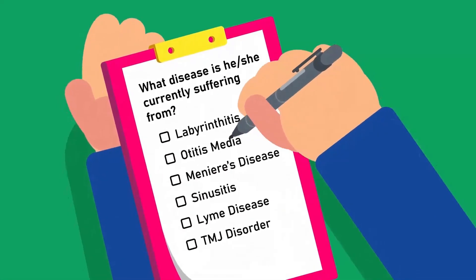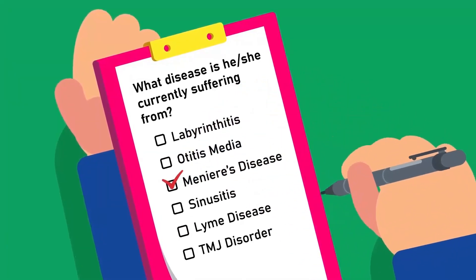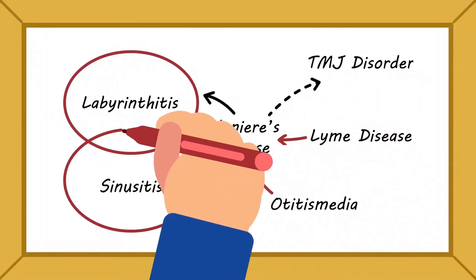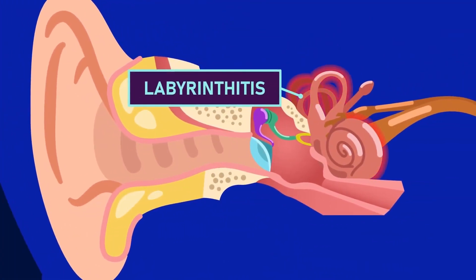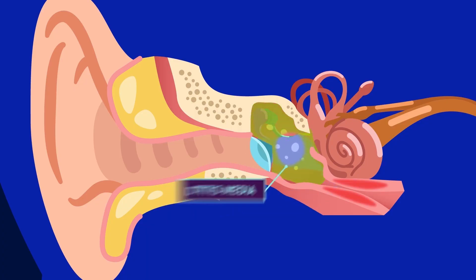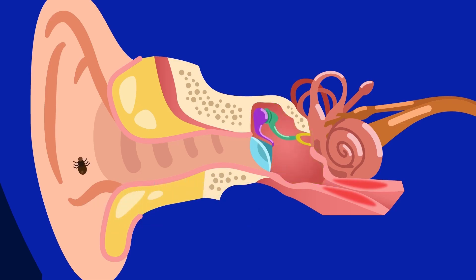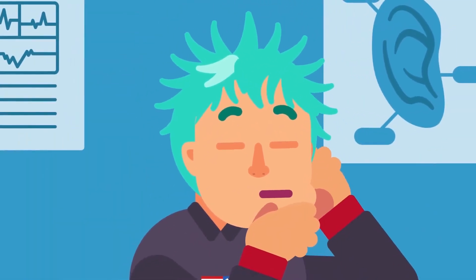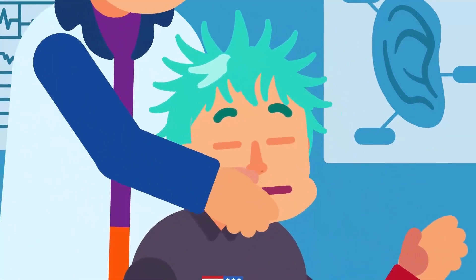Related conditions: symptoms and tests can help to separate Meniere's disease from other similar conditions. Some diseases with similar symptoms or connections include: Labyrinthitis — disturbance of the labyrinth caused by inflammation without fluid buildup; Sinusitis — fluid buildup in the Eustachian tube; Otitis media — when it occurs at a younger age, it can lead to Meniere's disease during adulthood; Lyme disease — an infection caused by Borrelia burgdorferi bacteria may manifest as hearing loss; and Temporomandibular joint disorder — treatment for this can also alleviate Meniere's symptoms.